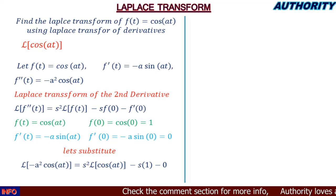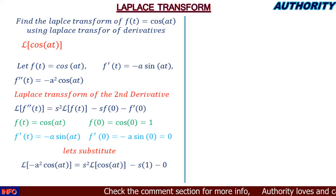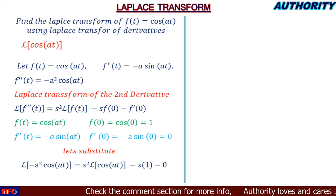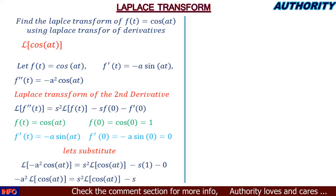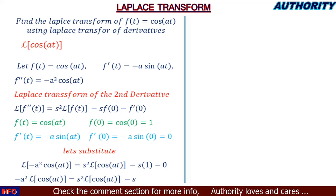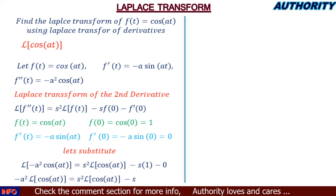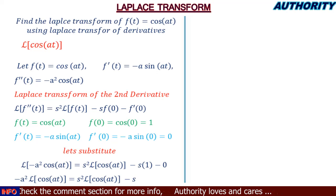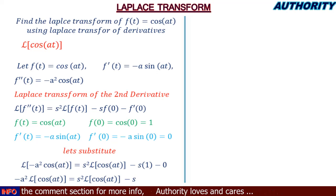We can take the −a² outside the Laplace transform. So we have: −a²·L{cos(at)} = s²·L{cos(at)} − s. This is the equation we now need to rearrange.